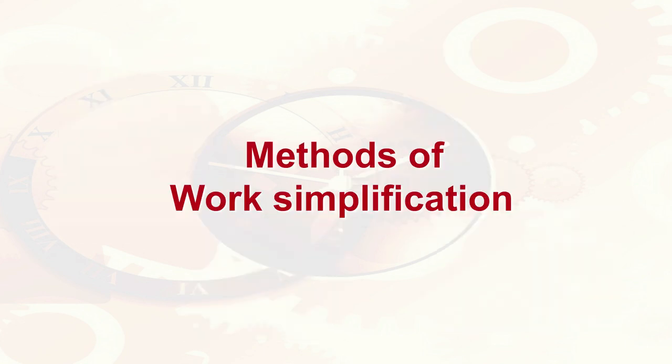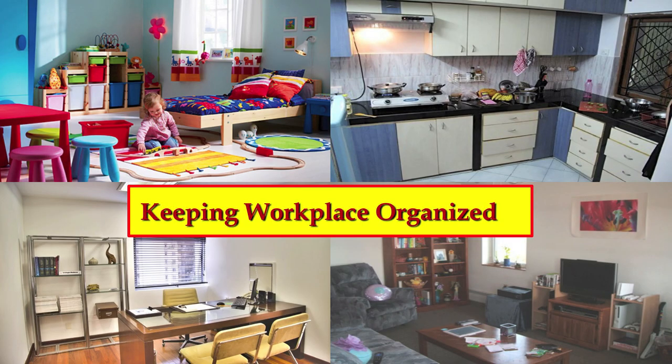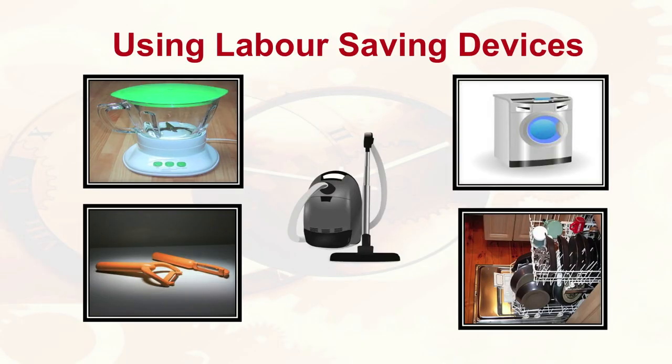Let us learn different other methods of work simplification. Keep the workplace organized. You can see major areas of the house — a study room where everything is well organized, and a kitchen where everything is well organized and kept in the cupboard. You can also plan in a way where you can do many activities in one place. Work simplification means performing any task in the simplest way to conserve energy and time. You can use labor-saving devices: the mixer, the peeler, the washing machine, the rack — you can dry washed utensils at the same time, and cleaning can be done with an electrical cleaner.